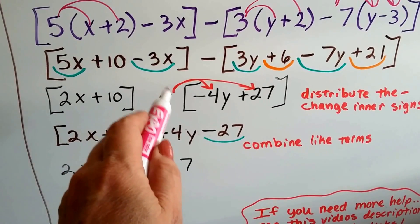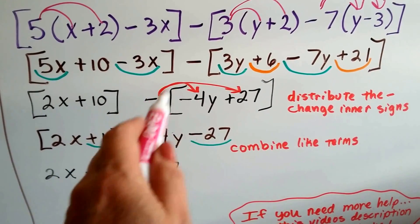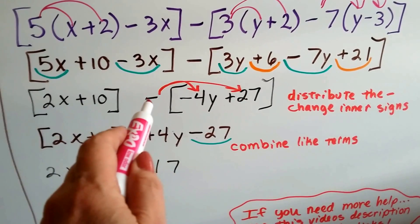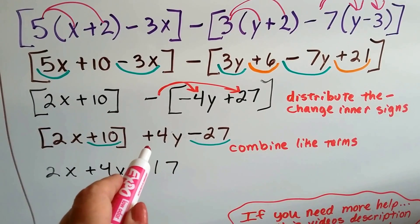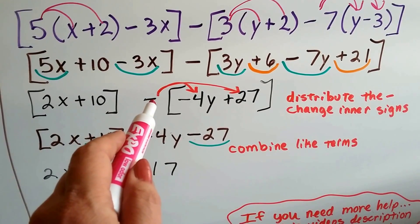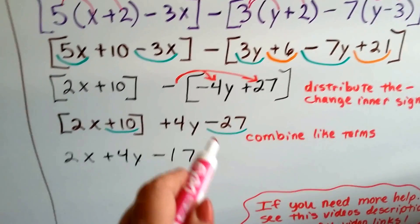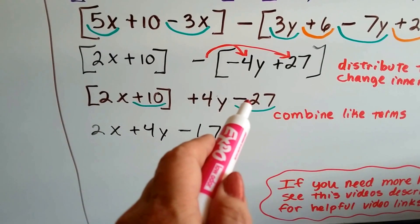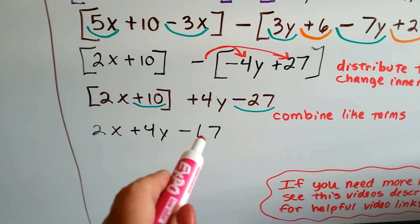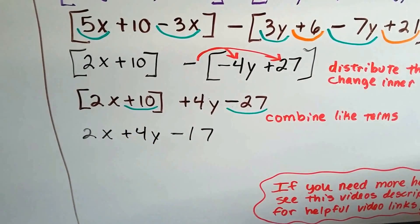So now we've got our 2x plus 10 on this side minus the negative 4y plus 27 on this side. We can distribute this minus sign, this negative sign to each thing in each term inside of these brackets. This negative times a negative 4y gives us a positive 4y. And the negative times a positive 27 gets us a negative 27. Now we can combine like terms again. We've got a plus 10 and a minus 27. That's going to give us a negative 17. So we end up with 2x plus 4y minus 17.